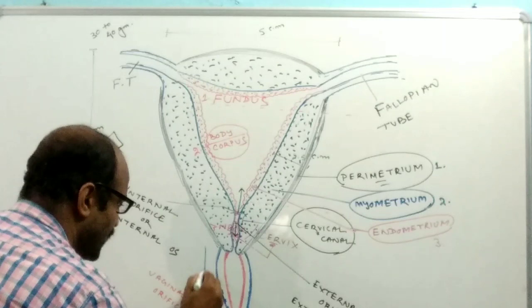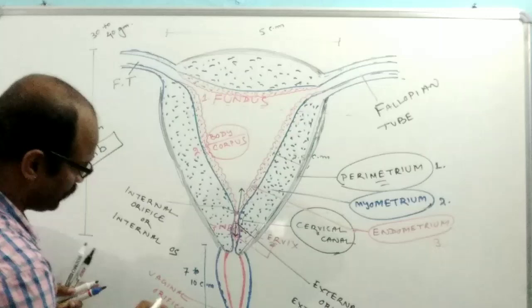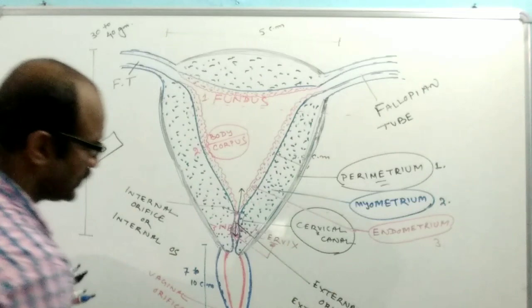The length of the vagina may be 7 to 10 cm. The external orifice, or vaginal orifice, is partially covered or enclosed by the hymen in virgins.